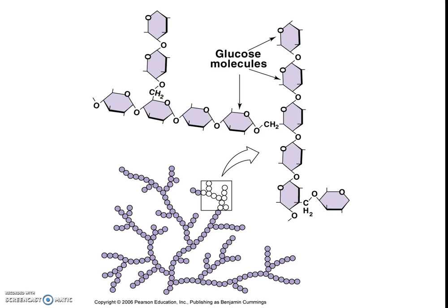Here we see an example of a common polysaccharide that we store in our body. This is called glycogen, which we store both in our liver and in our muscles. This is very similar to the way plants store starch. We eat the starch that plants store, but we store our sugar as glycogen. Notice there are many side chains in this structure — that's one way we can tell the difference between glycogen and starch. Glycogen has many more side chains of glucose molecules.